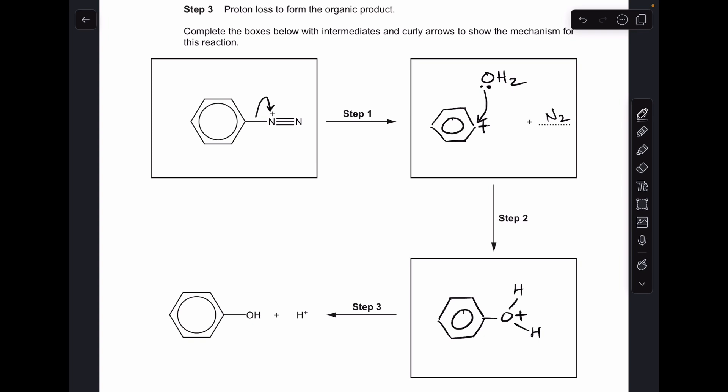And step three, proton loss to form the organic product. So a pair of electrons in one of the OH bonds will be attracted or will go to the O-plus, and that H will break off as an H-plus ion, and give our products phenol and the H-plus ion.